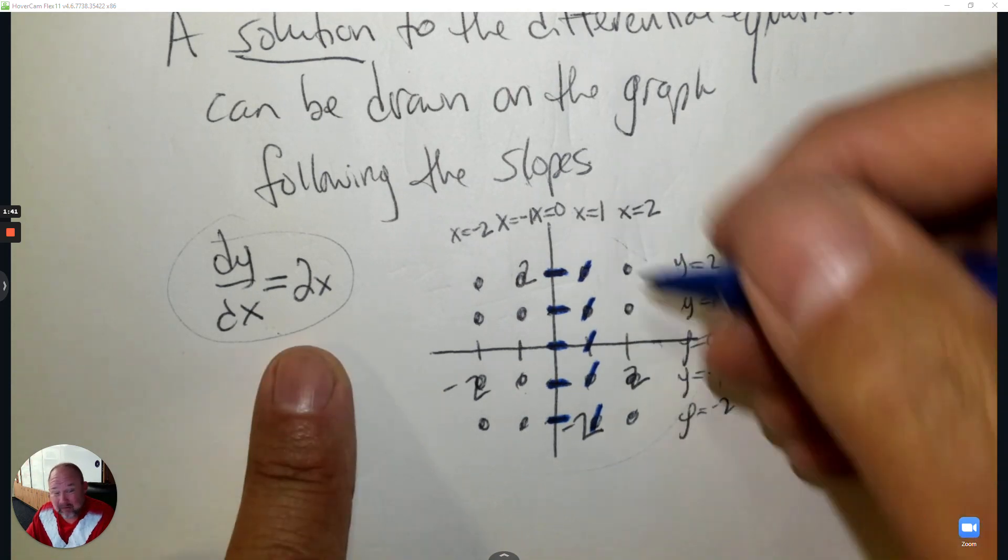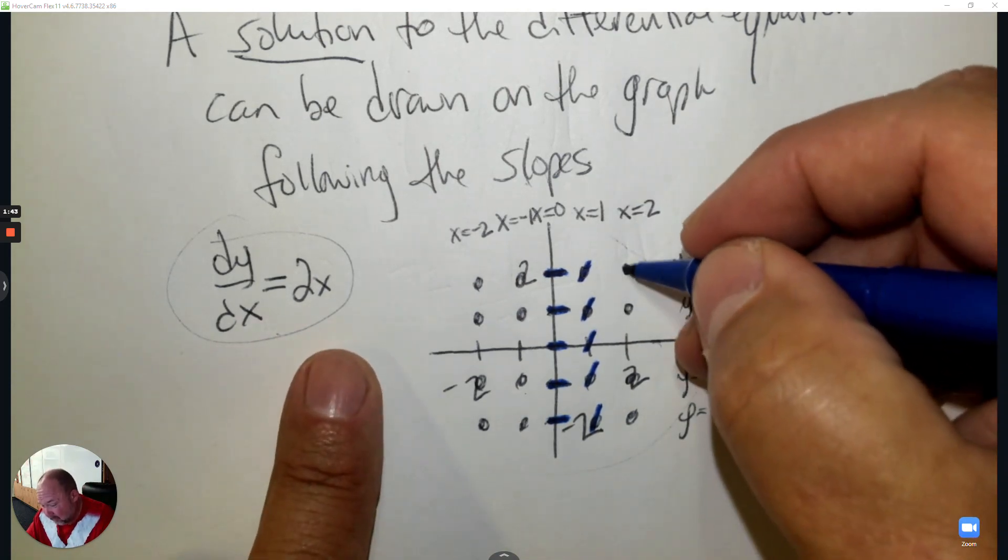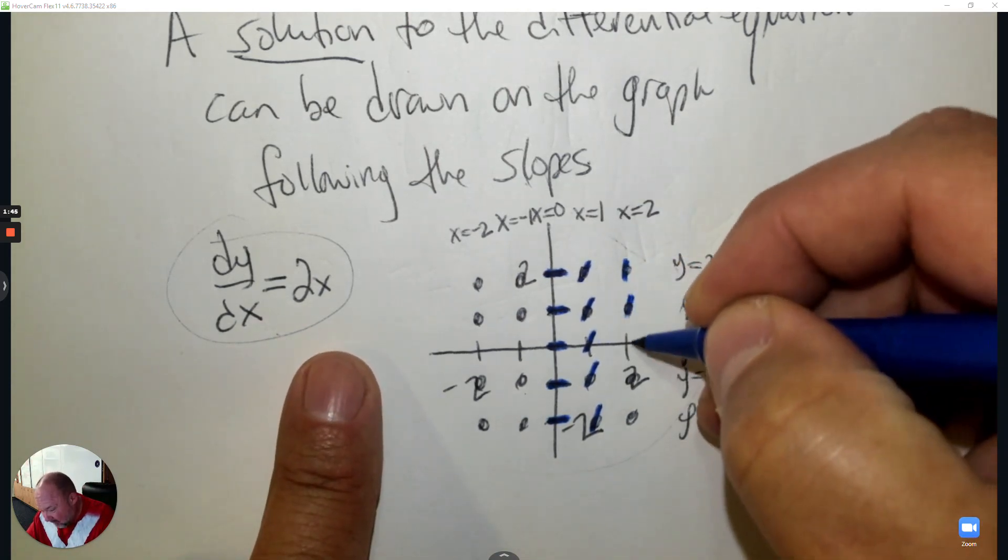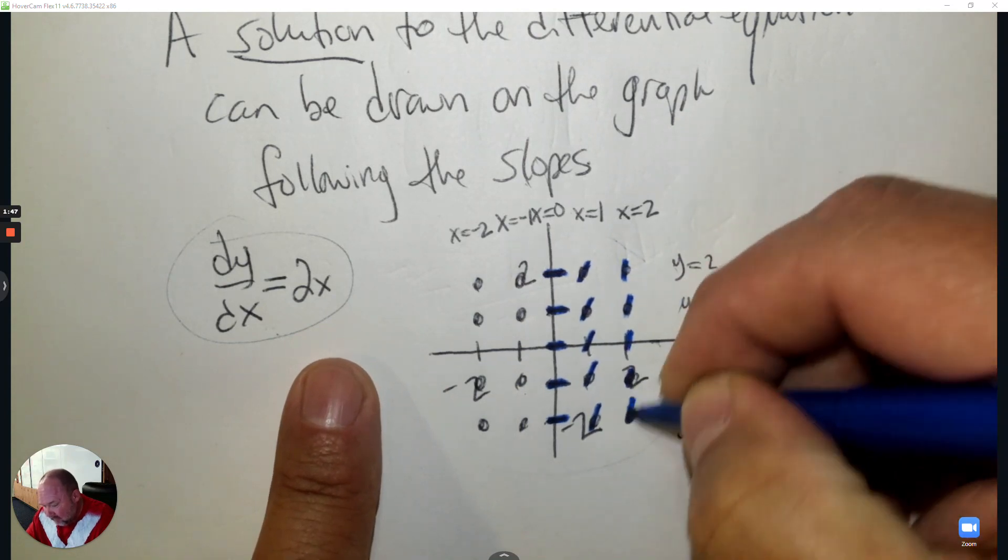Then if I plug in 2, it has a slope of 4, right? 2 times 2 is 4, so it's even steeper. I've got to make sure I draw that nice and steep. I'm kind of estimating it, but I'm making sure I'm consistent in how I do it.